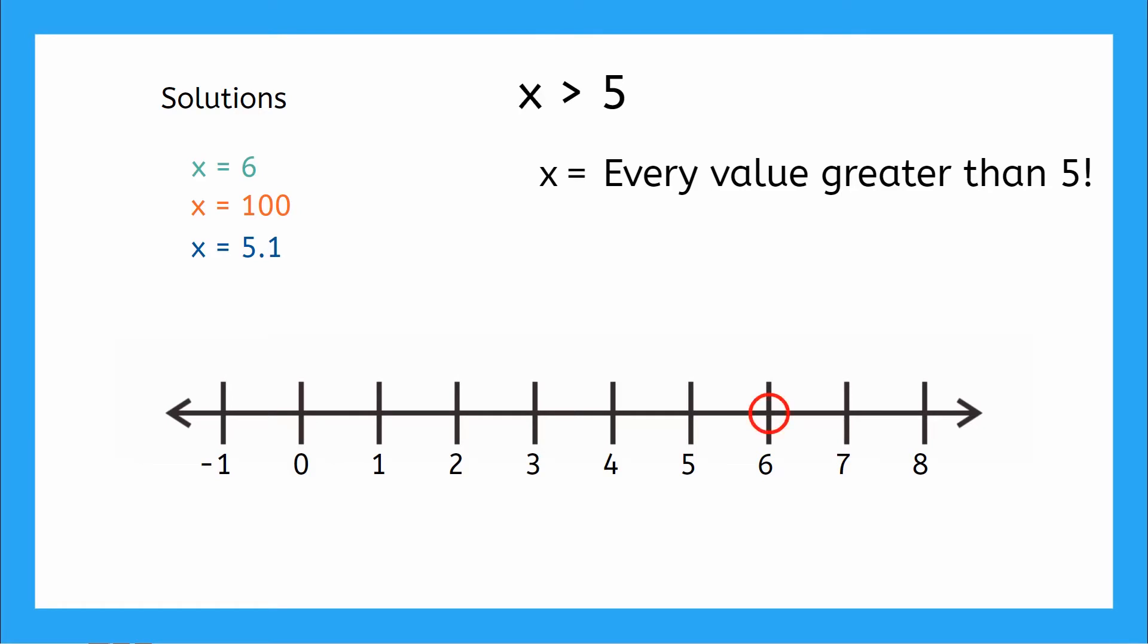Does that mean I start at 6? No way, then we would miss all those numbers between 5 and 6 that are greater than 5. So instead, we go to 5 and we draw a circle. This open circle means starting at 5 but not including 5, and then I draw a line with an arrow at the end, and the arrow means that this line keeps going to infinity because every single number that is greater than 5 is a solution, and that's it. We plotted our solutions.